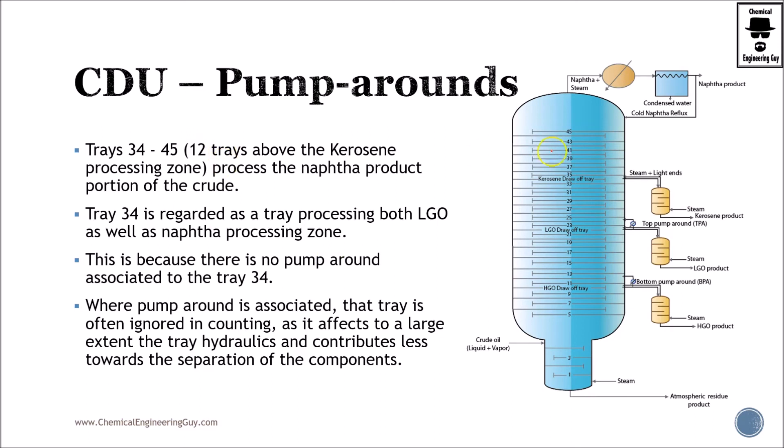Finally, 34 to 45. So this is 34 to 45, will be essentially the liquefied petroleum gases, light gases, and naphtha. So this is very important because this is most of the gasoline, and actually this will be about 45% of the barrel. So let's pay attention to this. In tray 34, we're going to have both LGO and naphtha processing zones. So this is a very important part.